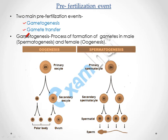Gametogenesis is the process of formation of gametes. In males it is called spermatogenesis, and in females it is called oogenesis. In males, spermatogenesis takes place inside the male reproductive organ, which is the testes.